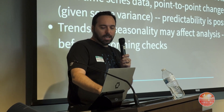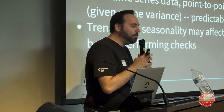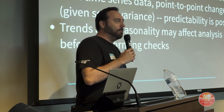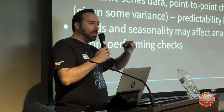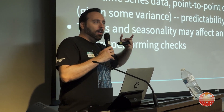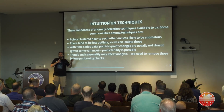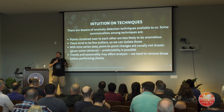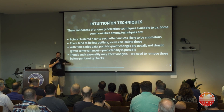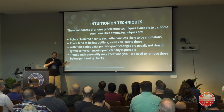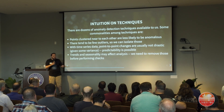Now let's talk about techniques. There are dozens and dozens of these things — entire books on different techniques for anomaly detection in different contexts: univariate, multivariate, time series, non-time series. But what we typically see is: points that are clustered near to each other tend to be less likely to be anomalous. Going back to the law of proximity — the things spatially near to each other are more likely to be related. If you have a large cluster of things, that's not an outlier; that's just another example of normal.